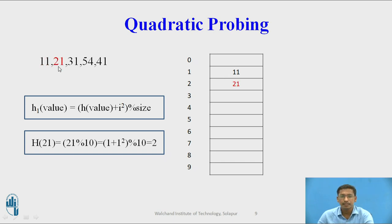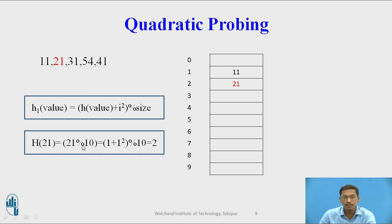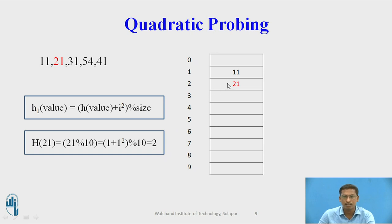Next element is 21. Calculate 21 mod 10 = 1. But index 1 is already occupied by 11, so collision occurs. Using quadratic probing: (1 + 1²) mod 10 = (1 + 1) mod 10 = 2. So 21 will be inserted at index 2.